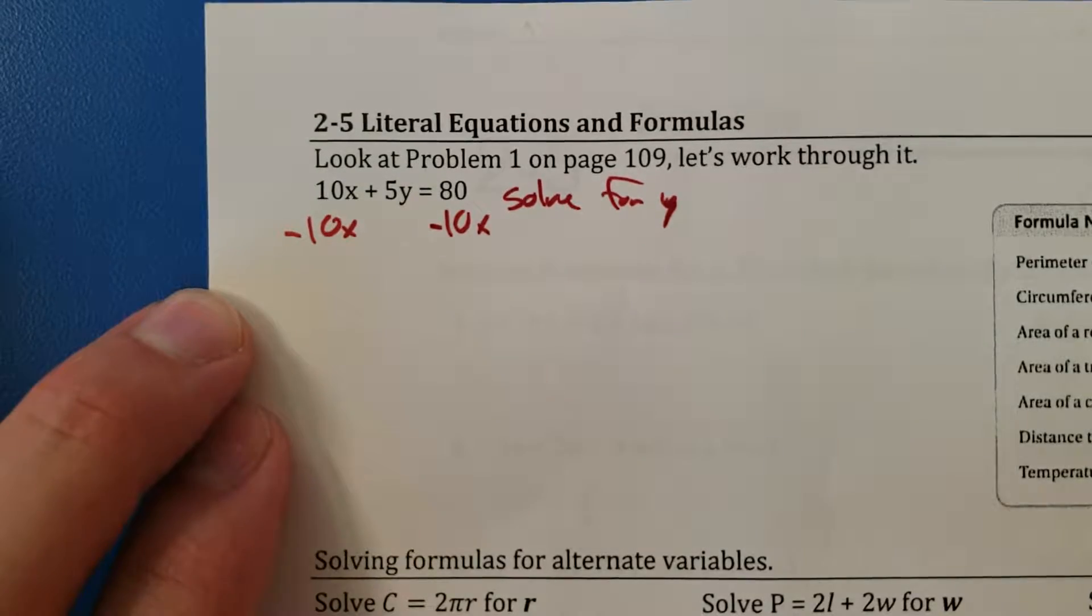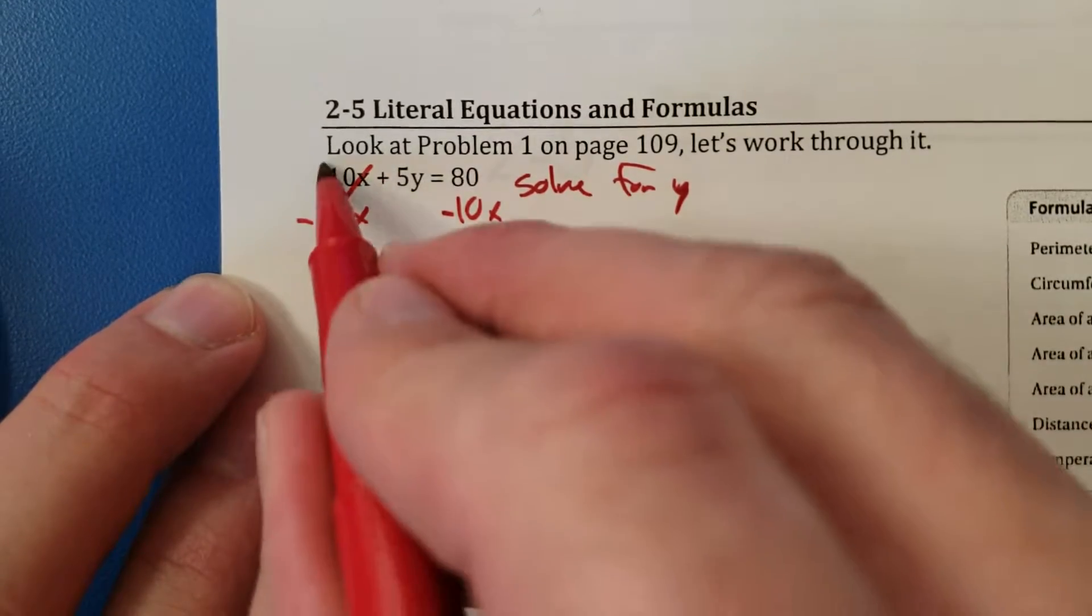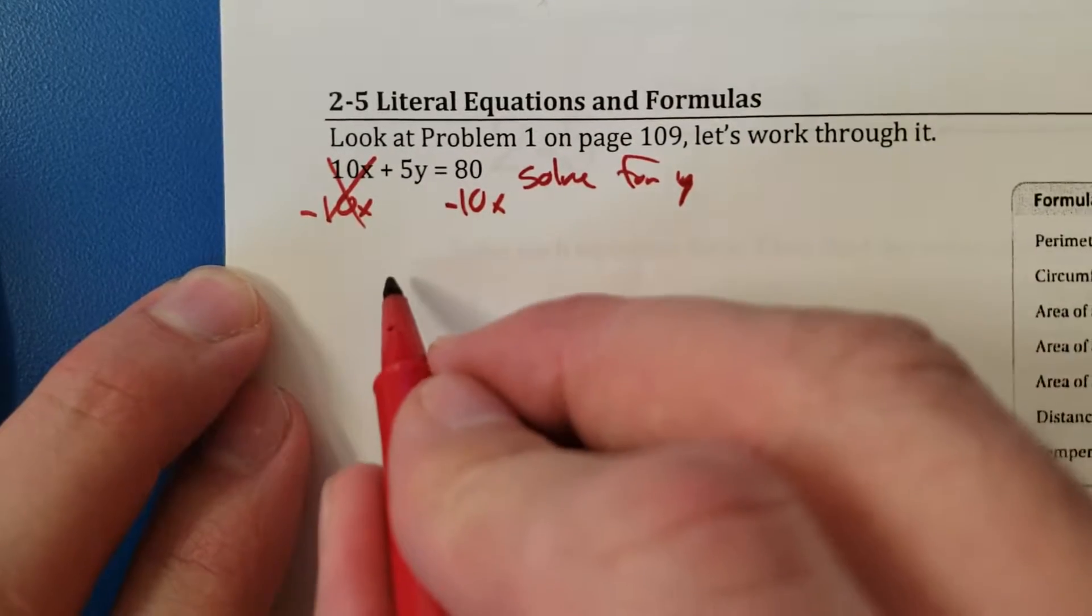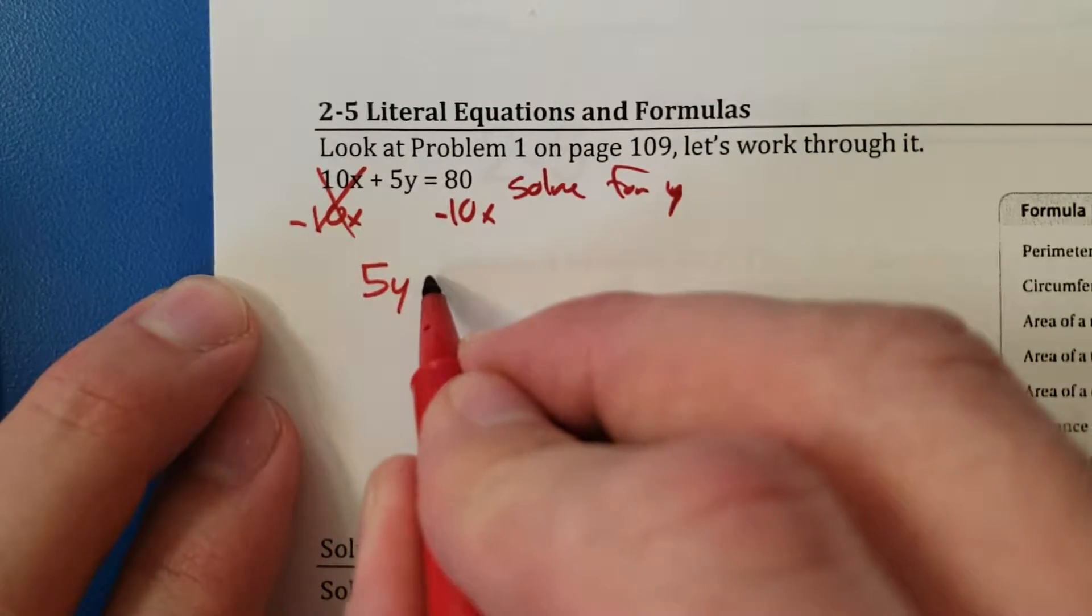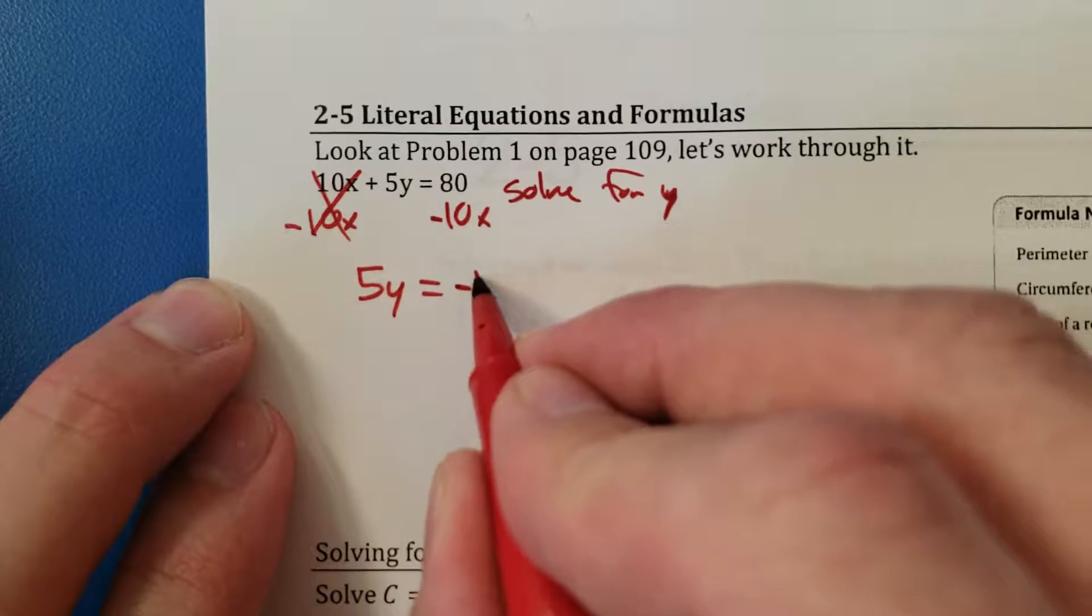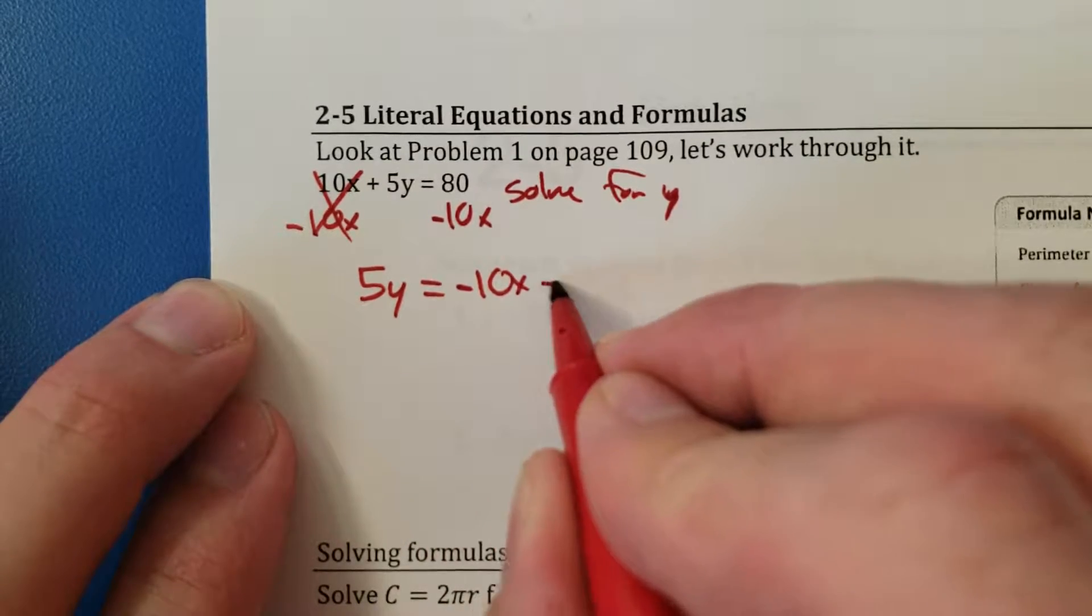So we'll subtract 10x from both sides. And what do we have left? After we do that, it's gone. We basically move it over here. That's another way to think of it. We have 5y equaling negative 10x plus 80.